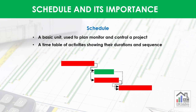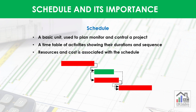Schedule is basically a timetable which shows duration and sequence of activities. Other project data like resources and cost is also associated with this schedule through its activities. This means that a schedule helps in resource and cost planning of the overall project and also their monitoring and controlling. Also, change or delay in the activities may affect the resources and cost associated with these activities, which needs to be re-planned through the schedule.